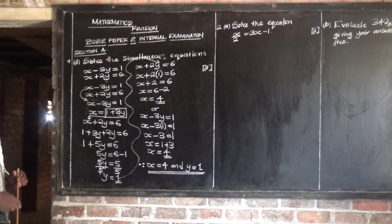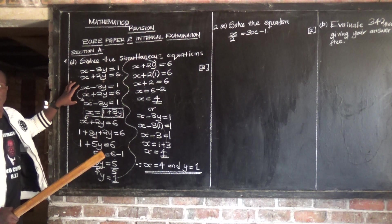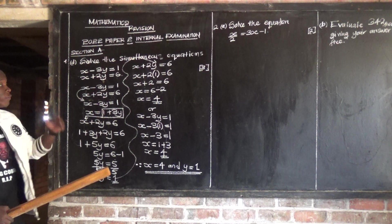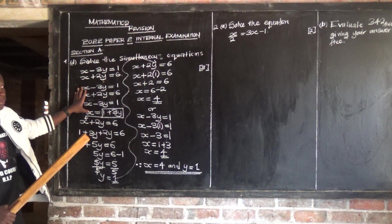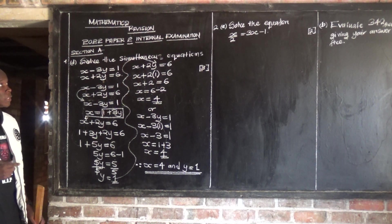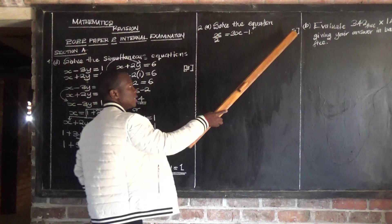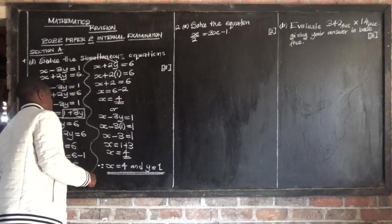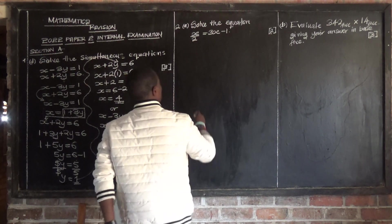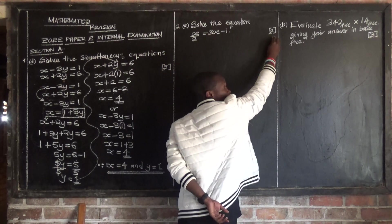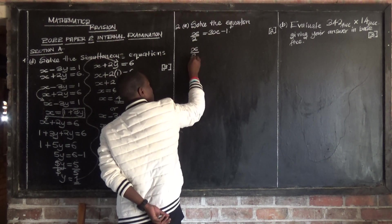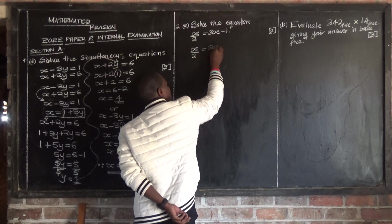Let's look at question number 2. We are done with question number 1, which carries 10 marks — so we've attained 10 marks. Question number 2 also carries 10 marks, and has part A, part B, and a construction part. Let's look at part A of question 2. We are given an equation which carries 2 marks: x over 2 is equal to 3x minus 1.